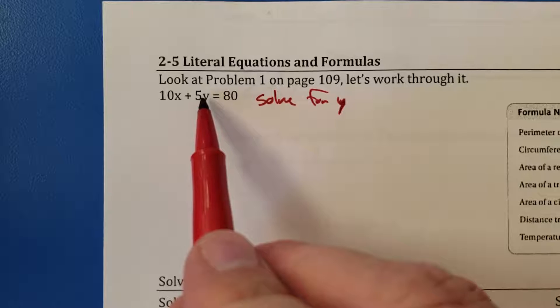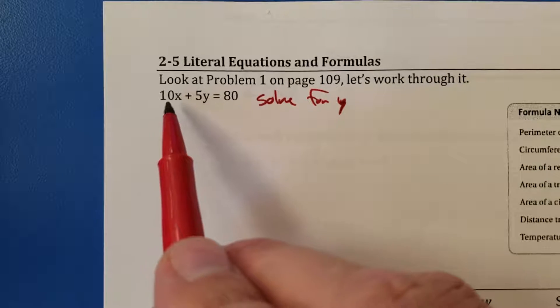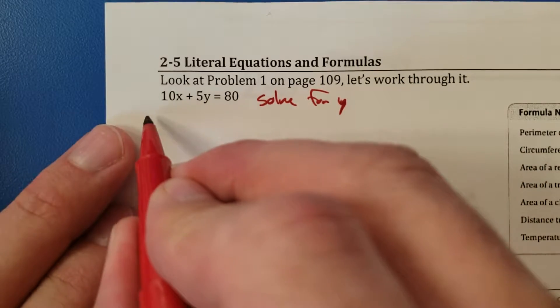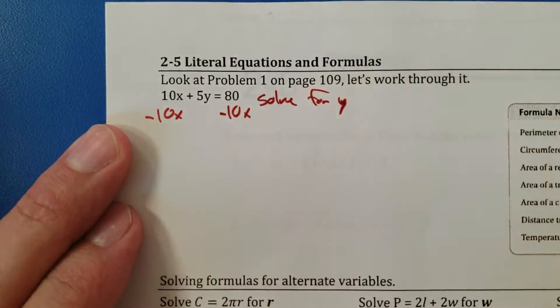So this 5 is connected by multiplication. It's not quite as powerful. Sorry, it is more powerful than this 10x. So how do you get rid of a 10x? Just like anything else, you just get rid of it. If it's positive, you subtract.